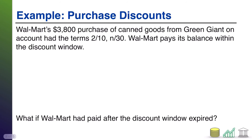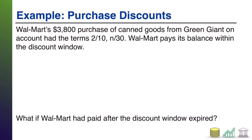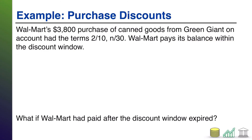Let's do an example. Walmart purchased $3,800 worth of canned goods from Green Giant on account with terms of 2 slash 10 net 30, and Walmart pays its balance within the discount window. Let's think about the original purchase first: Walmart bought inventory, so debit inventory $3,800, and they bought it on account, so credit accounts payable $3,800. That's the original purchase.